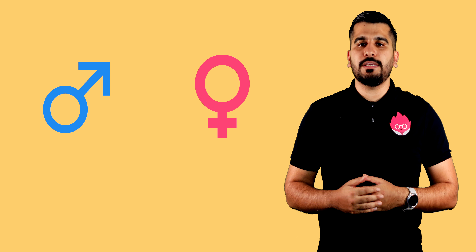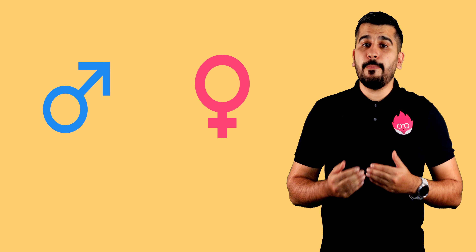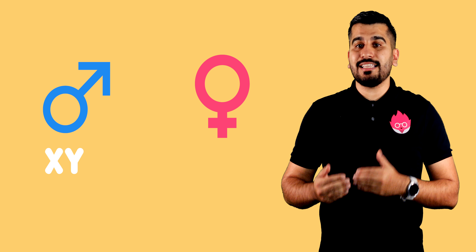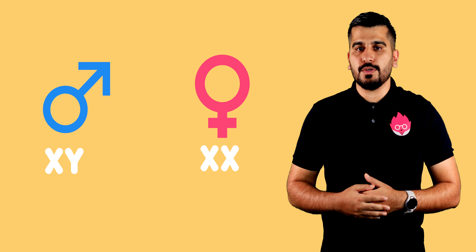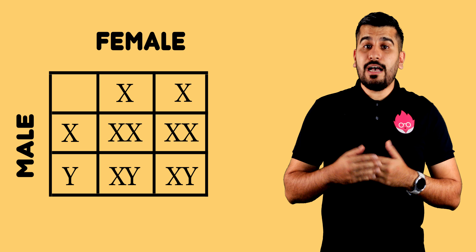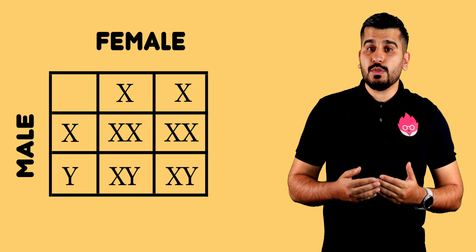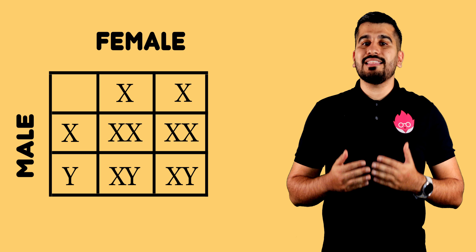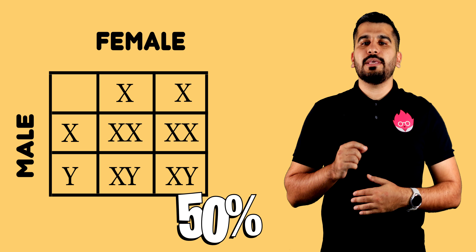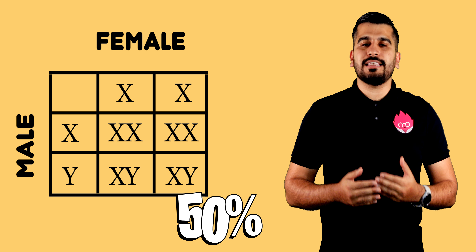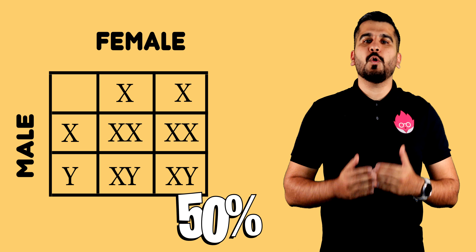We can also use genetic diagrams to predict the probability of being born male or female. We know that a male has X and Y chromosomes and a female has two X chromosomes. If we complete the Punnett square, we can see that there is a 50% probability that a child being born is either male or female.